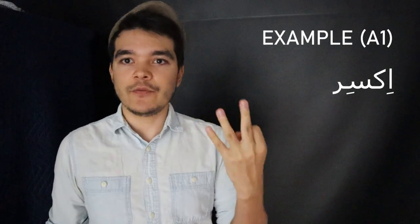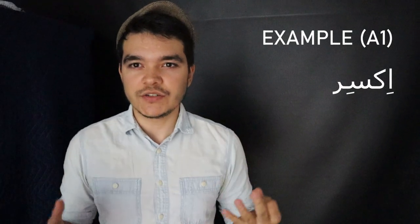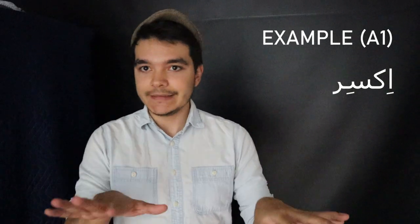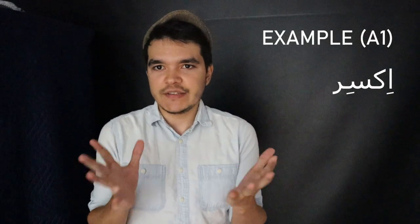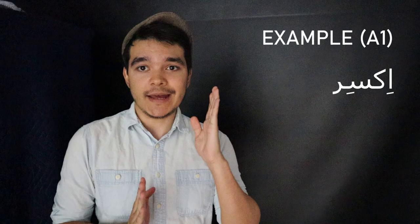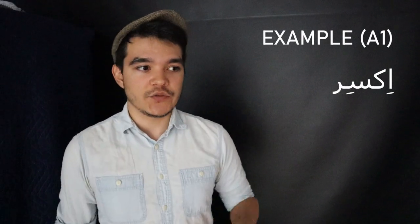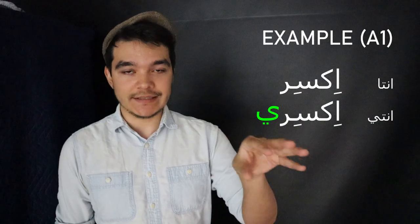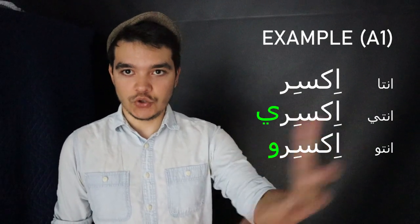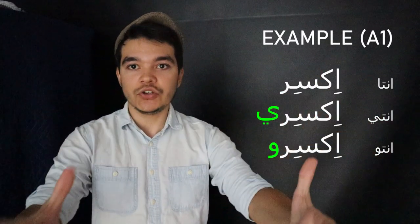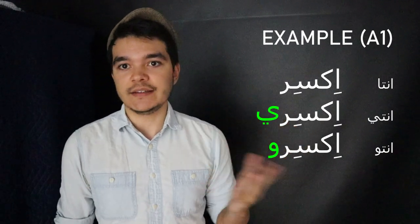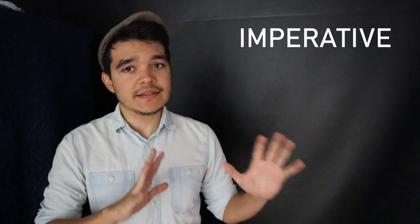There are three conjugations for the imperative: you male (enta), you female (enti), and you plural (entu). It's really simple to switch between them — you add 'yi' for female and 'wu' for plural. So ixir is enta, ixiri is enti (break, female), and ixiru is you plural. The same basic principle applies across all the forms we've talked about — A1, A2, and so on.